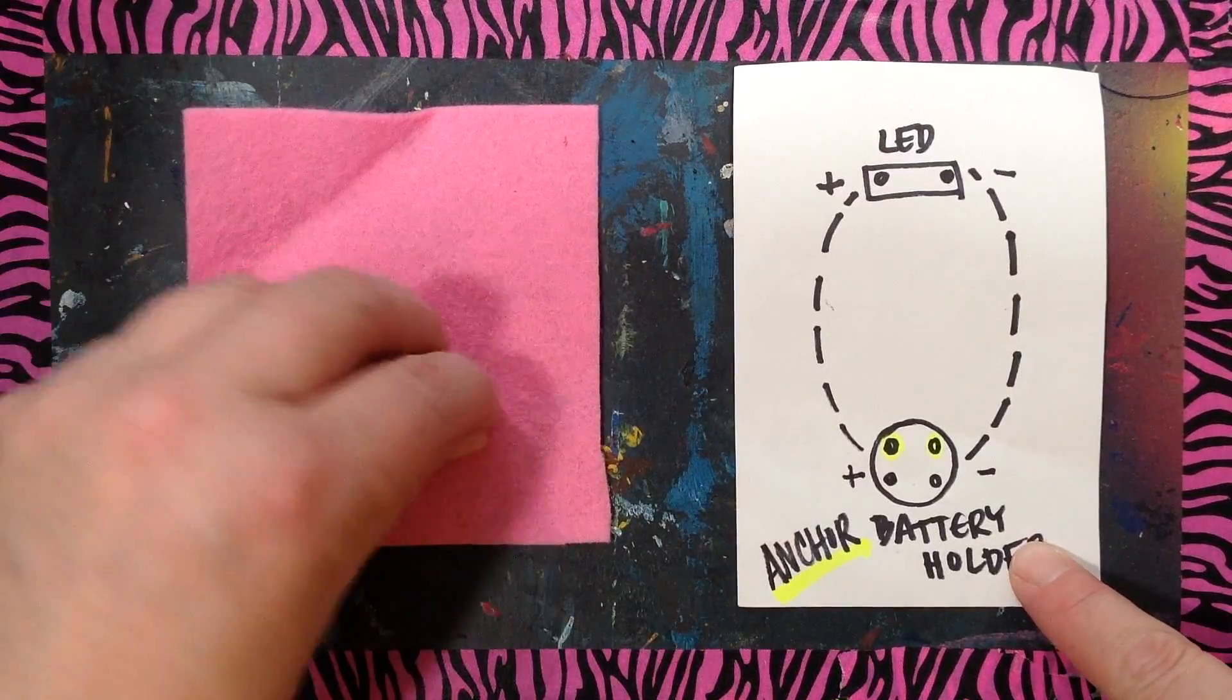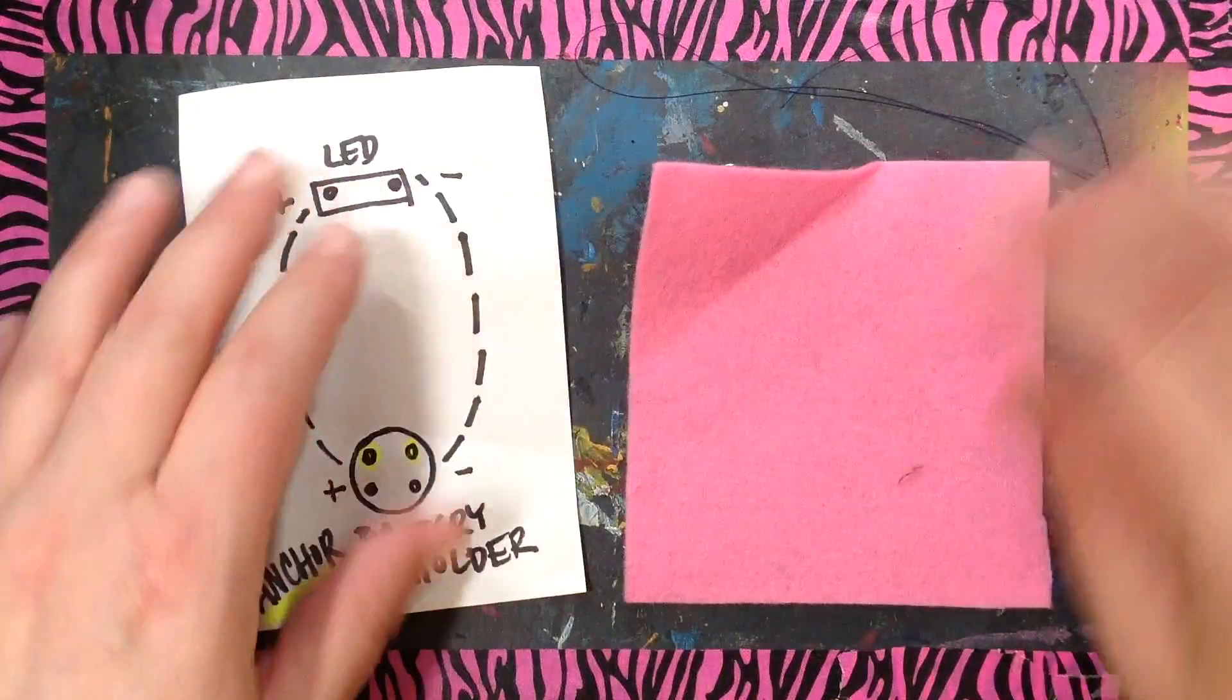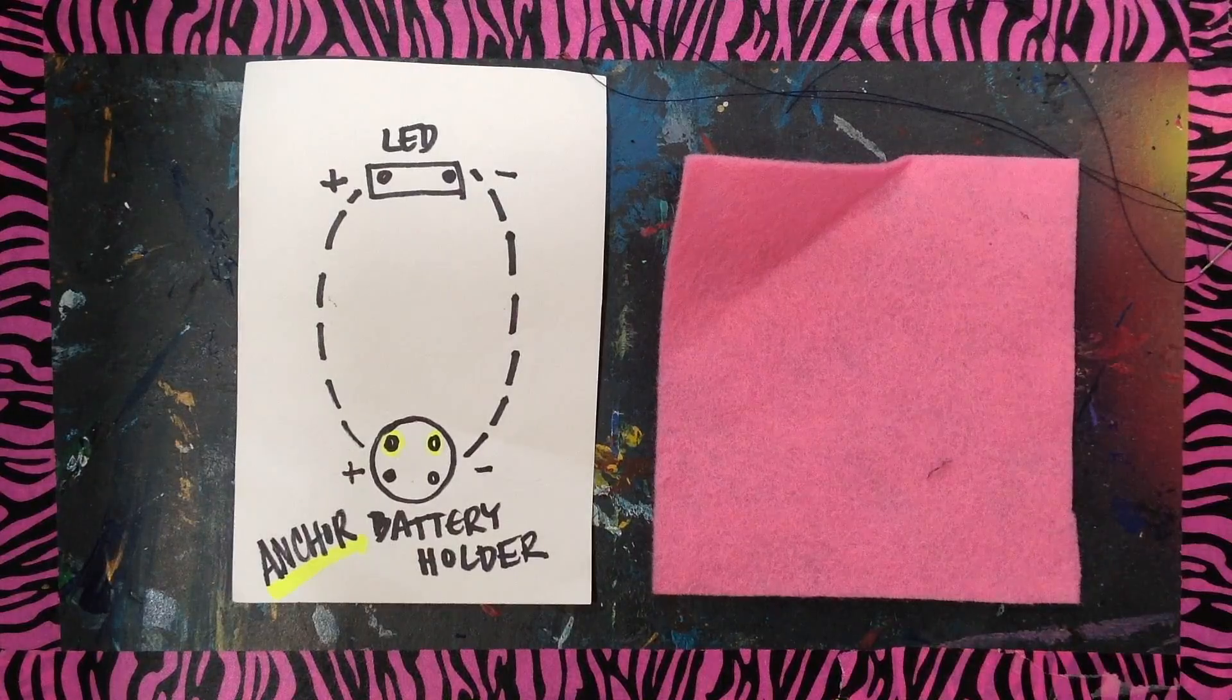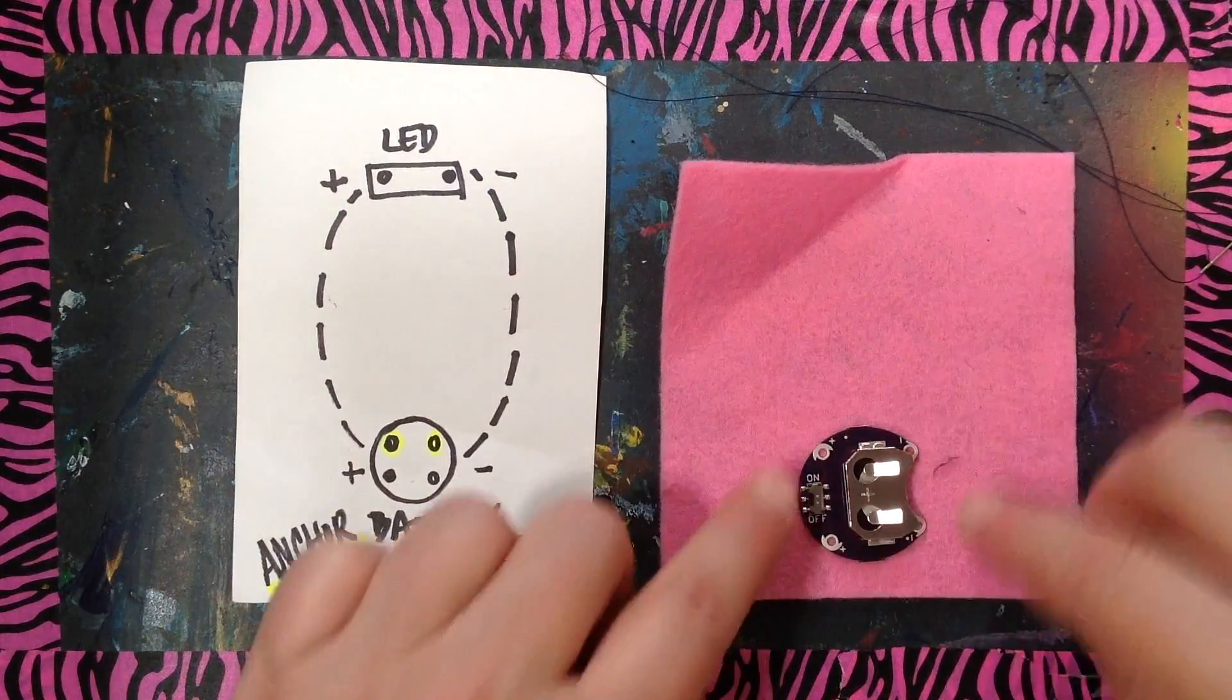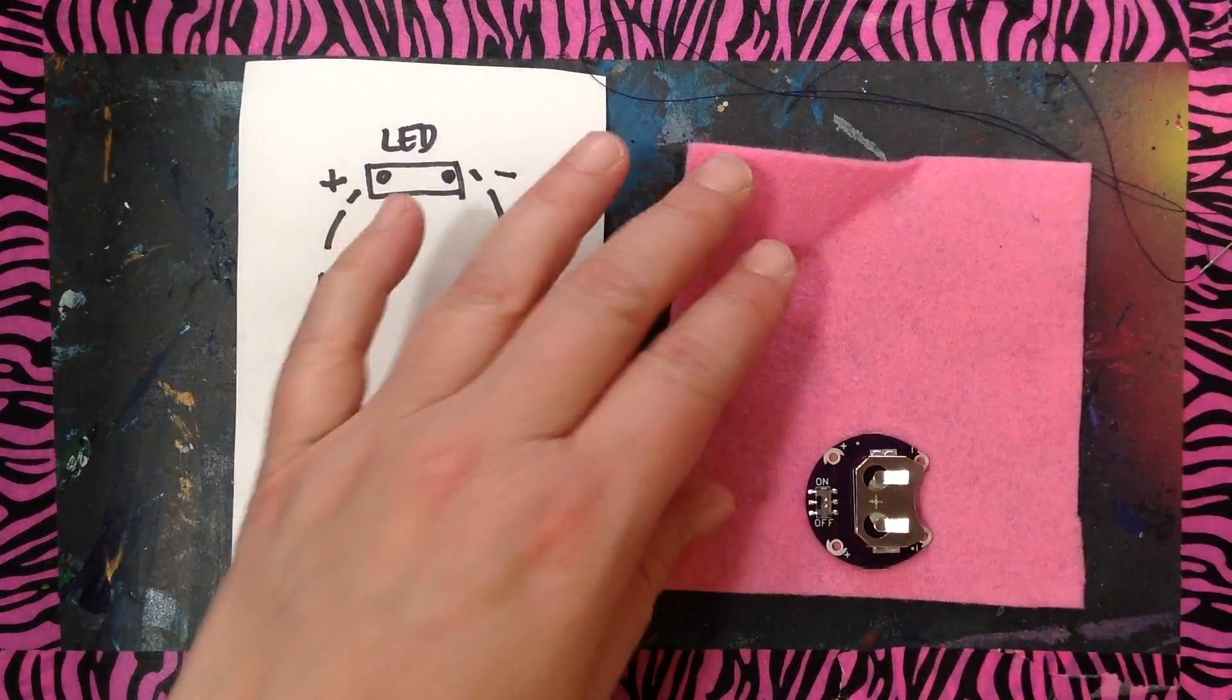So now that I see how that's going to go, now I can think about how this is going to look on my practice fabric here. So I've got plus plus here and here.